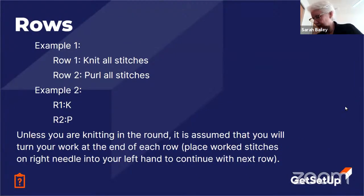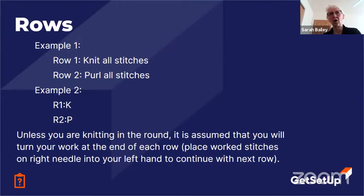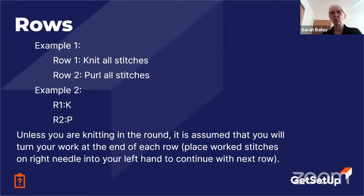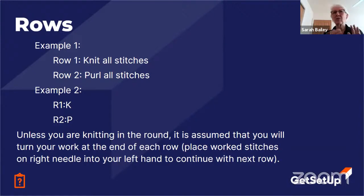Here's an example of breaking the code for a row. Ideally you'd see something like: 'Row 1: knit all the stitches. Row 2: purl all the stitches.' But what you're likely to see is 'R1: K' — meaning knit all the stitches on the row — and 'R2: P' — meaning purl all the stitches on the row. That's how the code works.